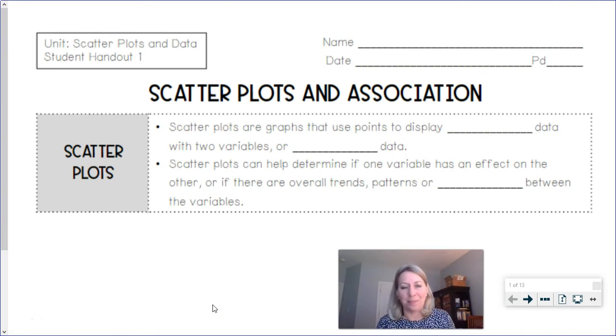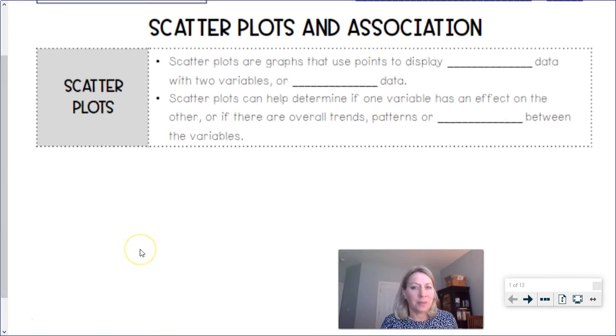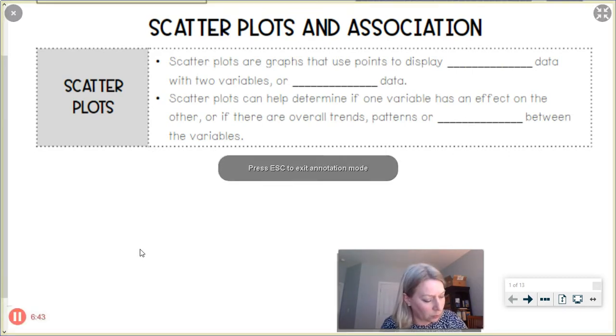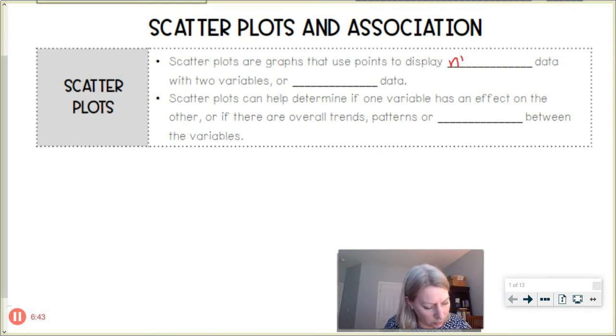So with all of that background and that being said, let's get started with our notes here. So scatter plots are graphs that are used to display numerical data with two variables, so it's called bivariate data. So on these blanks we're going to put display numerical data, numerical data with two variables or also known as bivariate data.